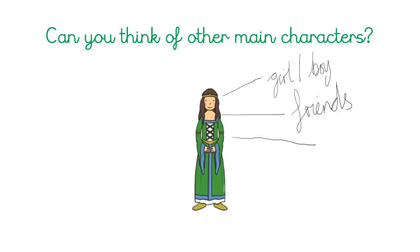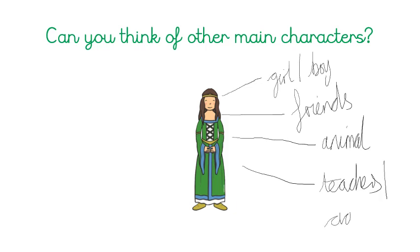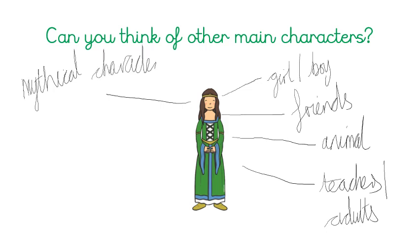We could use an animal as our main character. We could use our teachers or adults. We could also have a mythical character — a character that doesn't exist. For example, a unicorn doesn't exist but we could have a mythical character. We could also have a famous person.